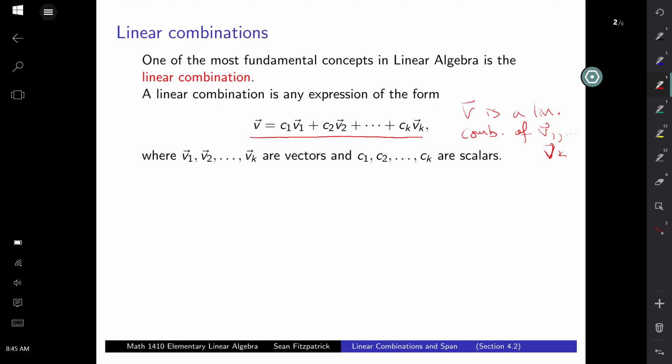Of course, if you have a bunch of vectors, you can form a linear combination. For example, let's say V1 looks like (2, -1, 0, 3), maybe V2 looks like (0, 2, 5, -4), and V3 is equal to (-1, 0, 1, 3).